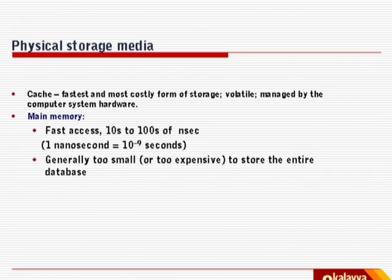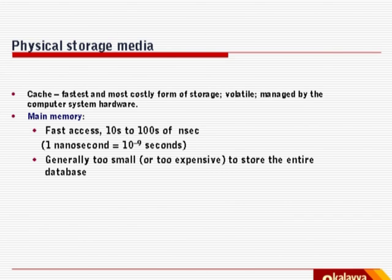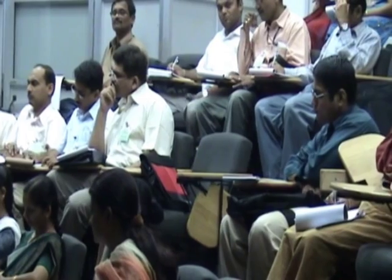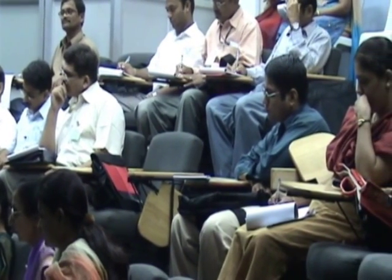The cache is the fastest and most costly form of storage. It is volatile and managed by the computer system hardware. This is even faster than the main memory, which is the fastest amongst all storage devices. Fast access—tens to hundreds of nanoseconds—but generally too small in size and too expensive to store the entire database. Persistent data required to survive power failures will never be stored in memory; it will be stored on disk.